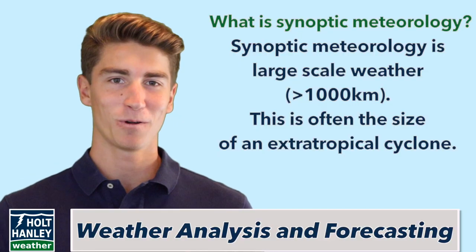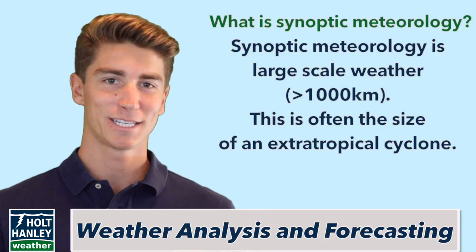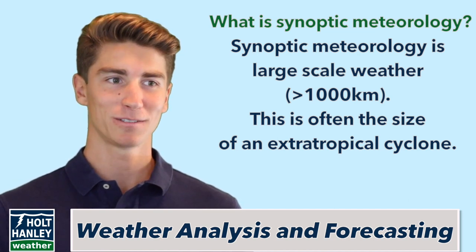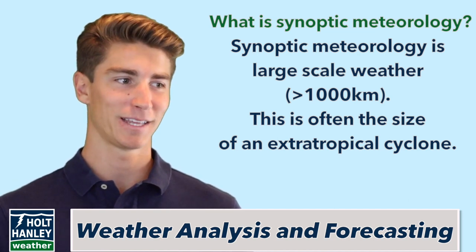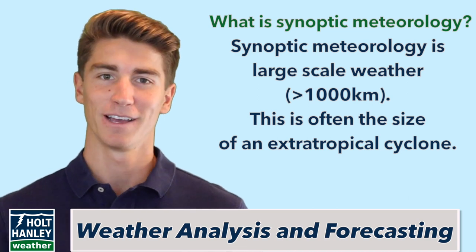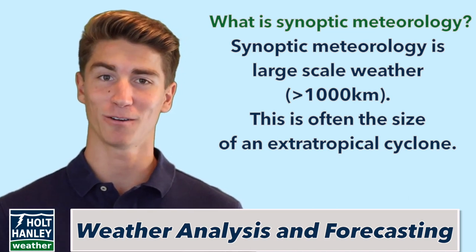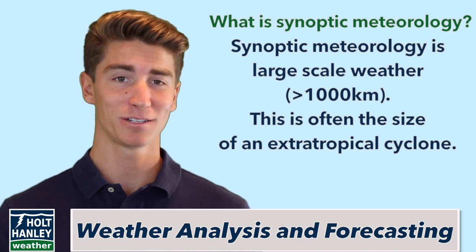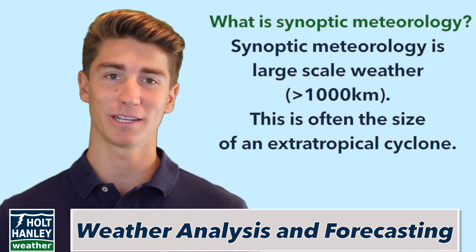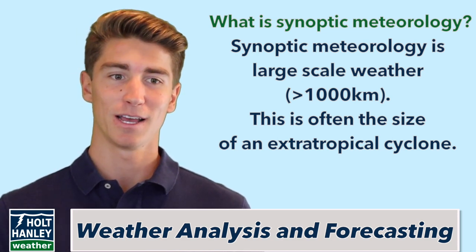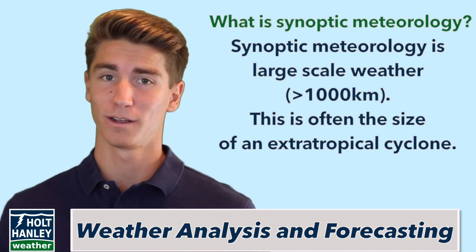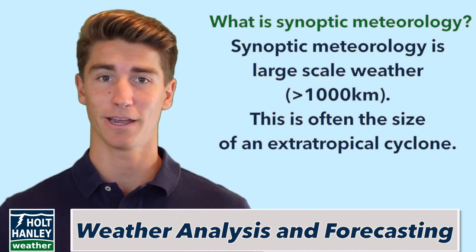Let's get into our first question of the day: what is synoptic meteorology? When we're talking about synoptic, it's basically a fancy way of saying large-scale weather. This is in contrast to microscale, which is less than 5 kilometers, or mesoscale, which is 5 kilometers to 1,000 kilometers. Synoptic is 1,000 kilometers or more, at least leading up to the planetary scale.